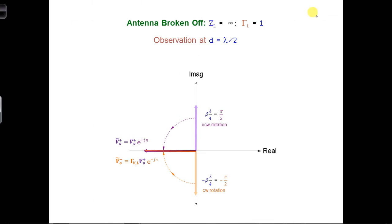At d equals lambda over 2, the phasors are aligned together once again. We get v at lambda over 2 is v naught plus e to the j 2 pi over lambda times lambda over 2